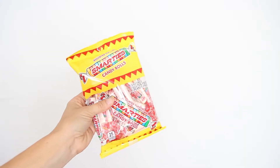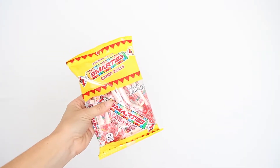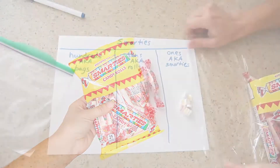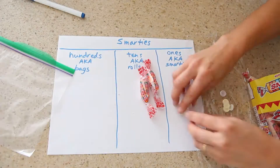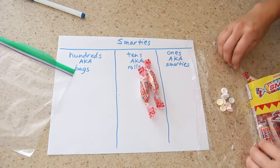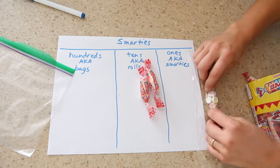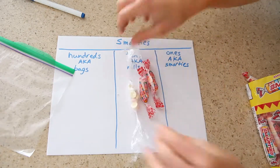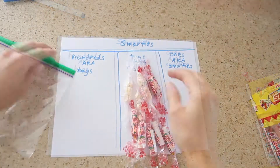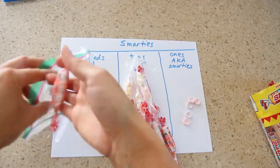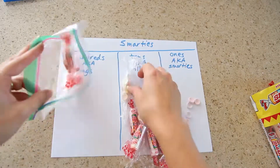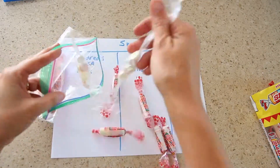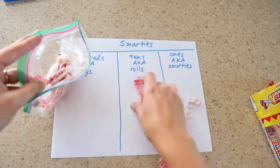If I was using a candy like Smarties, I would take each Smartie and then group it in a roll of ten, and then call ten groups of ten — ten rolls — I'd call that a bag.